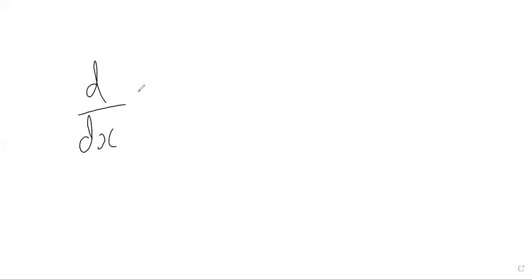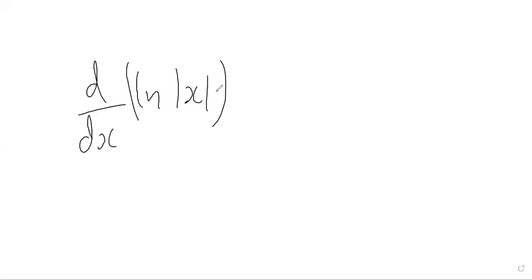Hello, so today's video is going to be about differentiating the natural logarithm function, but when we insert the absolute value of x — so we want to differentiate the log of the absolute value of x. This is going to be a chain rule problem, because we're taking a function of a function of x. The outer function is the natural log and the inner function is the modulus function.